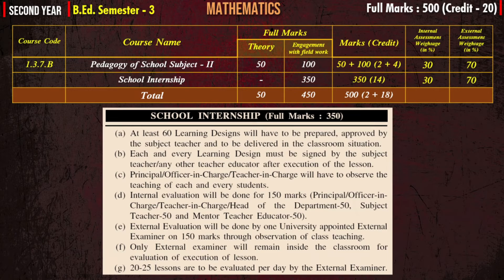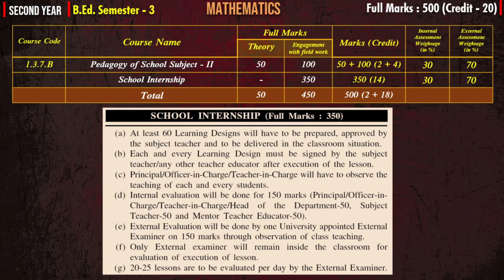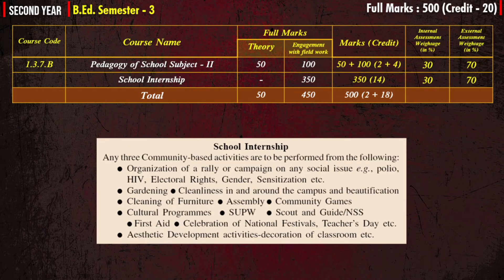For school internship, the full marks are 350 with 14 credits. At least 60 learning designs have to be prepared, approved by the subject teacher, and delivered in the classroom. Each learning design must be signed by the subject teacher or any other teacher educator after execution. The principal or teacher-in-charge will observe teaching of each student. Internal evaluation is for 150 marks and external evaluation is done by a university-appointed external examiner for 150 marks through observation of class teaching. The external examiner evaluates 20 to 25 lessons per day.